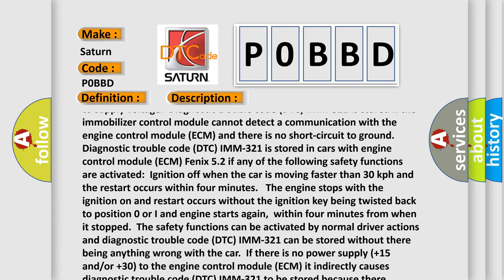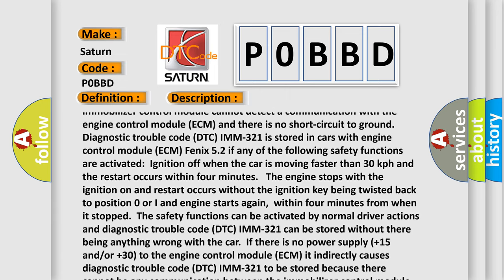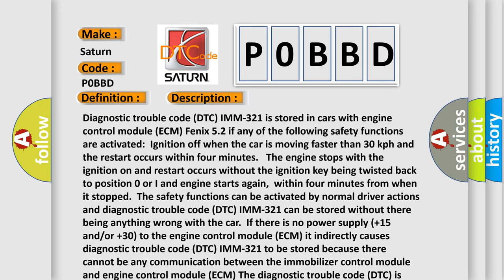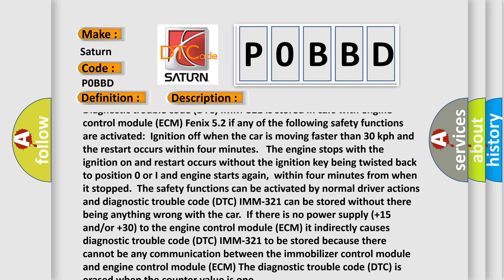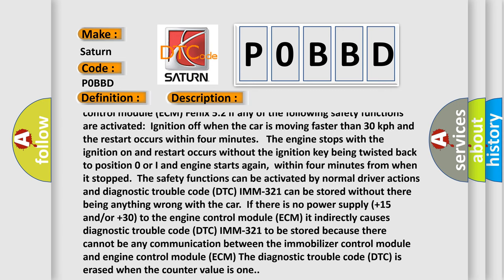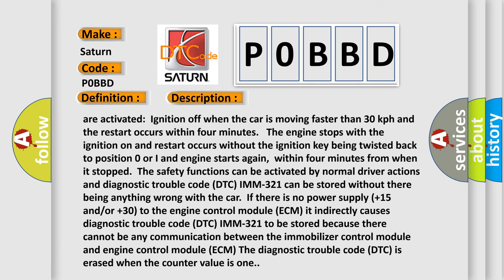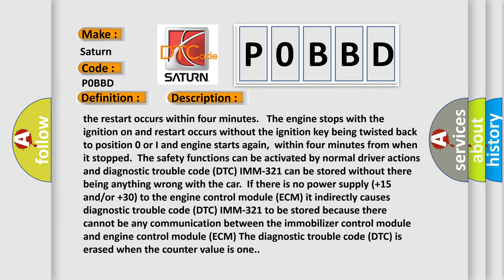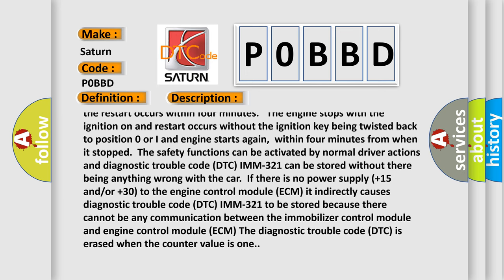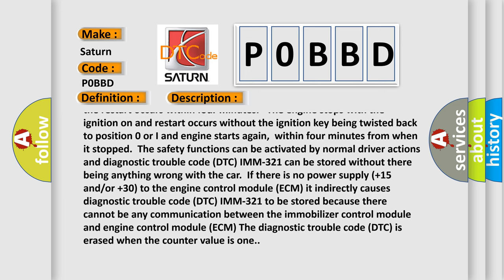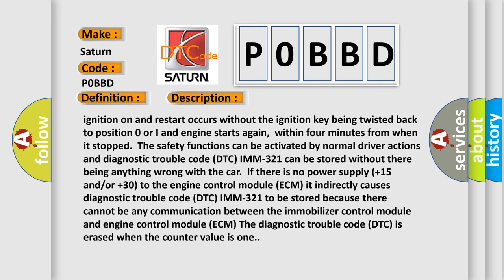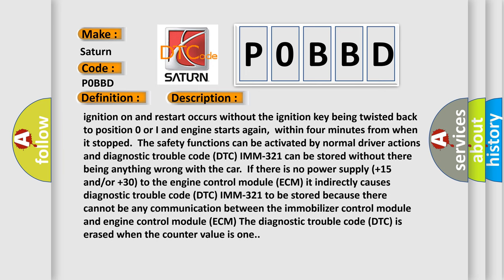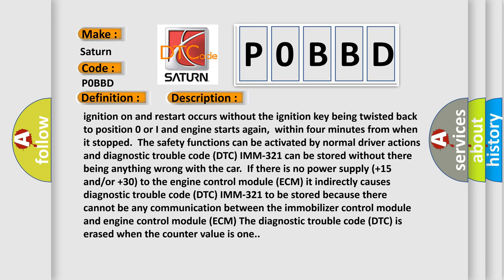Diagnostic trouble code DTC IMM 321 is stored if the immobilizer control module cannot detect communication with the engine control module ECM and there is no short circuit to ground. DTC IMM 321 is stored in cars with ECM Phoenix 52 if any of the following safety functions are activated: ignition off when the car is moving faster than 30 km/h and restart occurs within 4 minutes; or the engine stops with ignition on and restart occurs without the ignition key being returned to position zero, or the engine starts again within 4 minutes. The safety functions can be activated by normal driver actions, and DTC IMM 321 can be stored without there being anything wrong with the car. If there is no power supply (plus 15 and/or plus 30) to the ECM, it indirectly causes DTC IMM 321 to be stored because there cannot be any communication between the immobilizer control module and ECM. The DTC is erased when the counter value is 1.